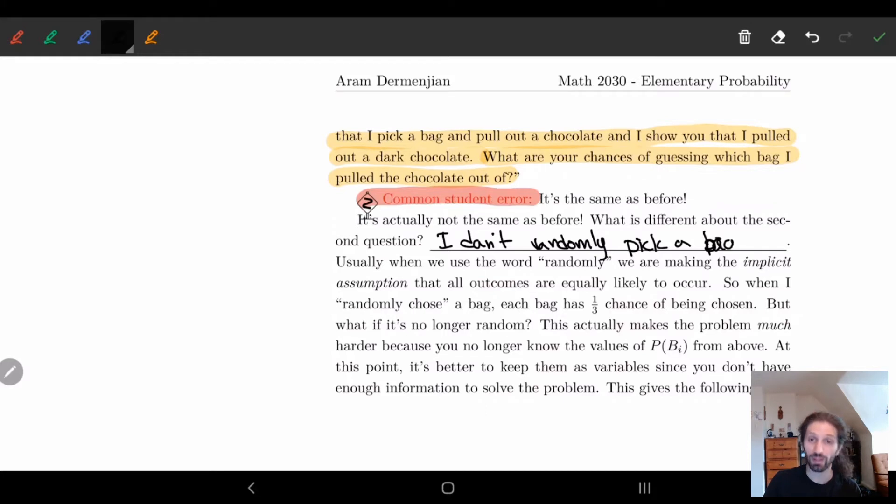That is what's different about the second example. And what this means is there's actually an inherent assumption, an implicit assumption, when we looked at this word randomly. When I say something is randomly chosen, what I'm saying is every single option has the same probability.